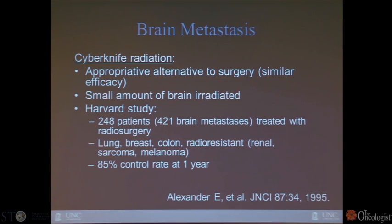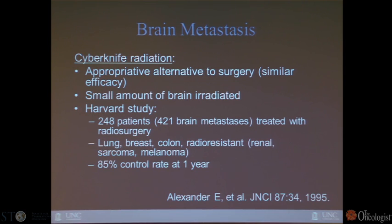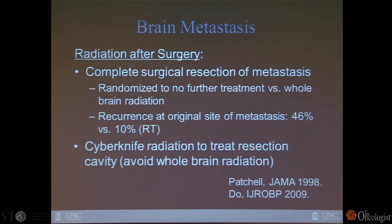Lastly, brain metastases — you'll hear much more about this when Dr. Ewan speaks. Radiosurgery is an alternative to surgery in some situations and can be quite effective in treating oligometastatic disease, because of treating a small volume of brain. There's one study from Boston on 248 patients with 421 brain metastases treated with radiosurgery, with an 85% local control rate at one year — pretty good results in terms of local control, which can be symptomatically very important.